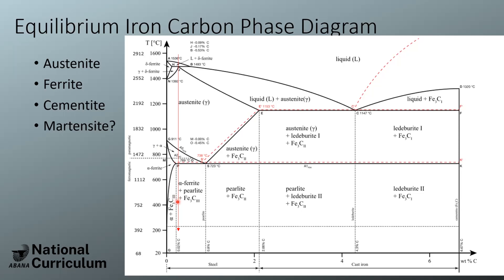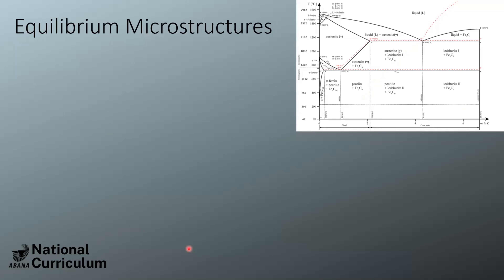That's because this is the equilibrium iron-carbon phase diagram — what happens when you're cooling at moderately slow cooling rates and giving time to allow for diffusion to occur. Martensite is the transformation that occurs when you go from austenite down to room temperature at very fast rates, fast enough that you're not allowing for diffusion — the movement of carbon through the steel microstructure. That rapid cooling forces what's called a kinetic transformation: a shear movement in the austenite structure that transforms it to the martensite crystal structure.